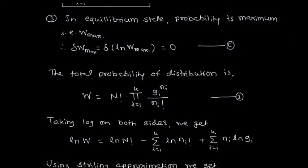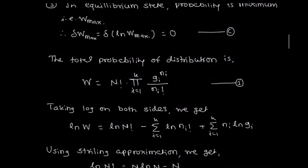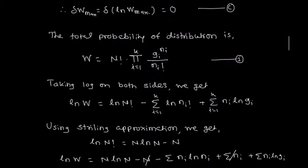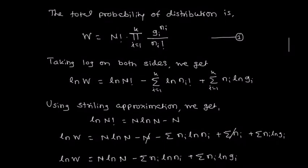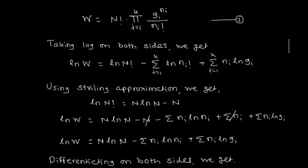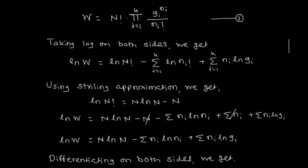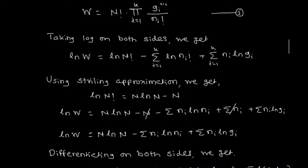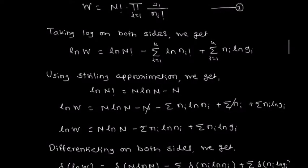Now we use Stirling's approximation. The term for log N! equals N·log N minus N, and similarly for log(ni!) we write the same formula. Simplifying the above equation: log W equals N·log N minus N minus summation of ni·log(ni) plus summation of ni plus summation of ni·log(gi). Since capital N and summation ni are the same they get cancelled, and the remaining terms give: log W equals N·log N minus summation ni·log(ni) plus summation ni·log(gi).